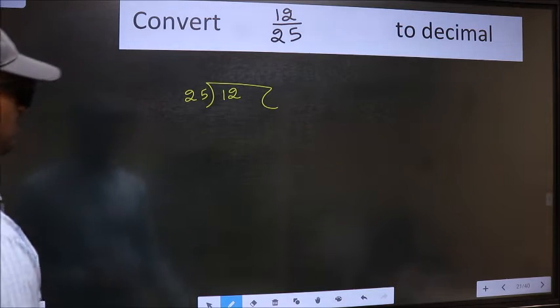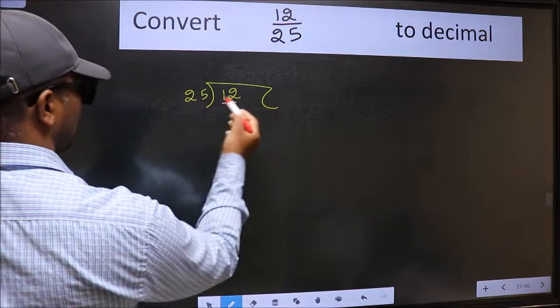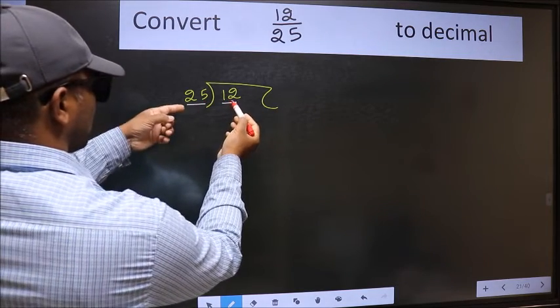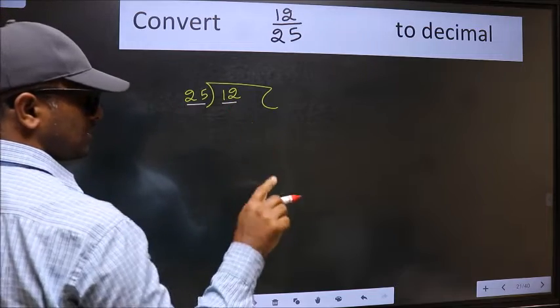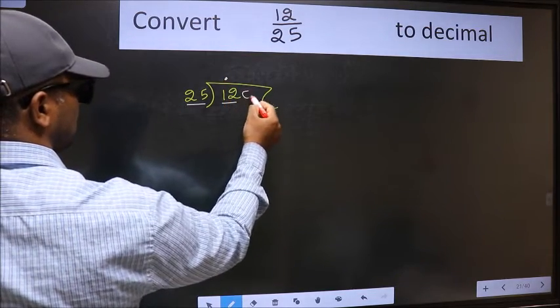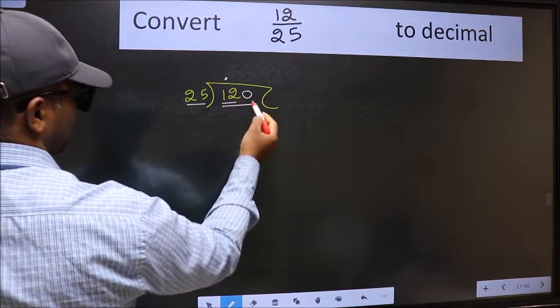Next, here we have 12 and here 25. 12 is smaller than 25, so what we should do is put a dot and take 0. So 120.